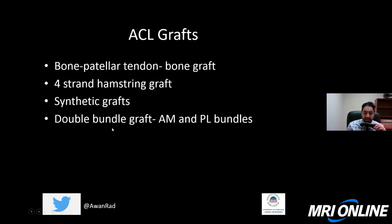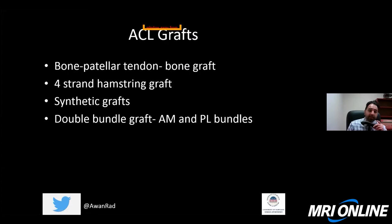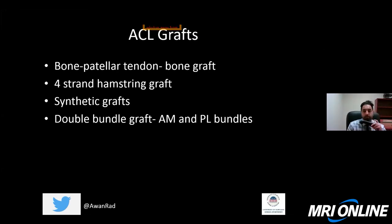There are also double bundle grafts that use both the anterior medial and the posterior lateral bundles of the ACL. The bone patellar tendon bone graft and the four-strand hamstring graft only use the anterior medial bundle to repair the graft. There are now more anatomic double bundle grafts that repair both the AM and PL bundles.